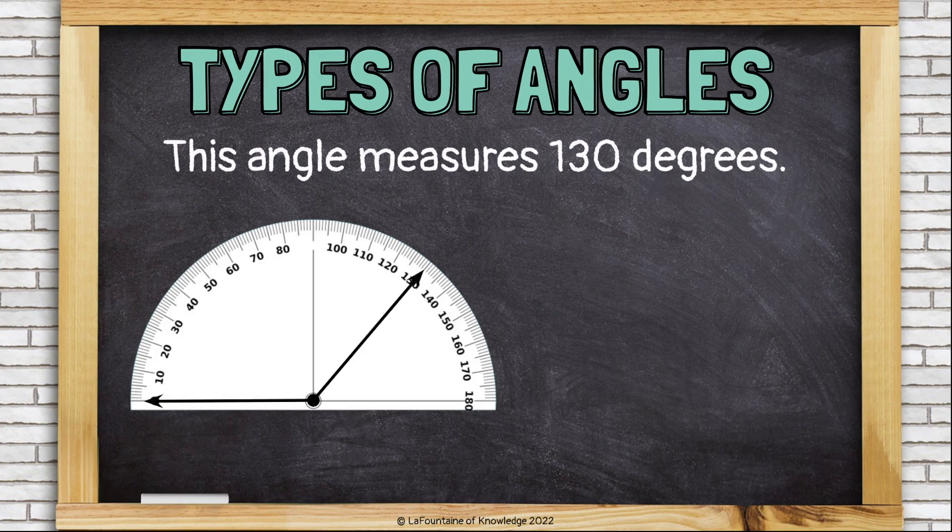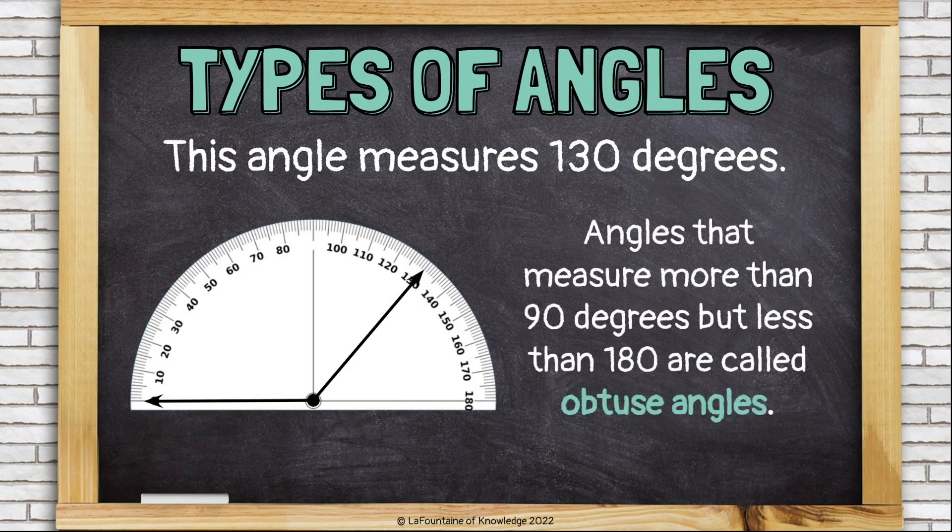This angle measures 130 degrees. Angles that measure more than 90 degrees, but less than 180 degrees are called obtuse angles. This one measures 130, which is between 90 and 180, so it's an obtuse angle.